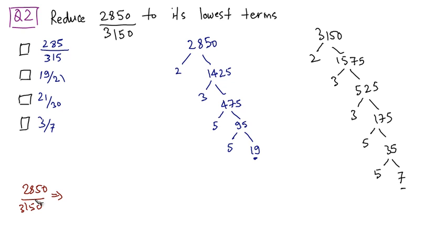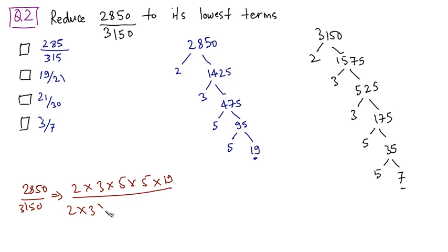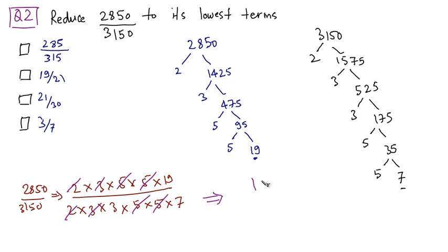We can write 2850 over 3150 as: numerator = 2 × 3 × 5 × 5 × 19, denominator = 2 × 3 × 5 × 5 × 7. We can cancel out a lot of terms: 2 cancels, 3 cancels, both 5s cancel. We are left with 19 on top and 7 on the bottom — wait, 7 times 3 is 21. So the answer is 19/21, which is option B.